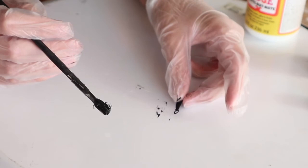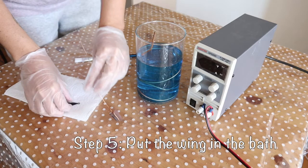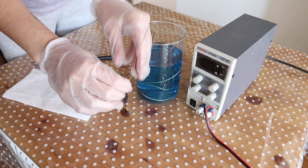Next, I put my wing in my electroforming bath. I have attached a piece of sea glass on my hanging wire to stop my wing from floating.